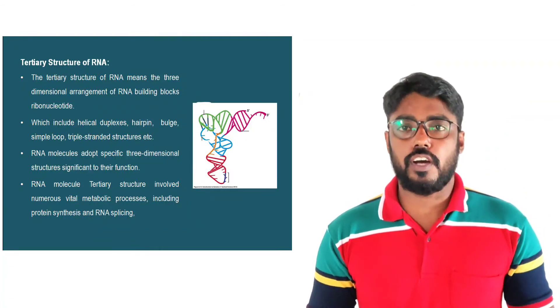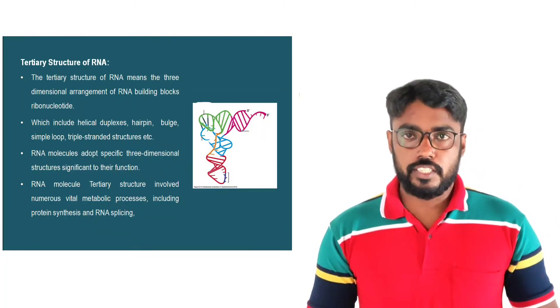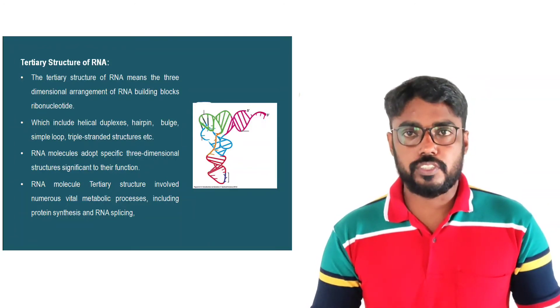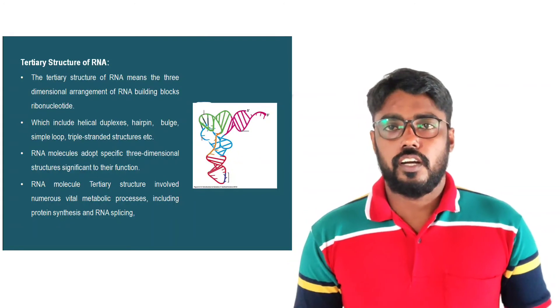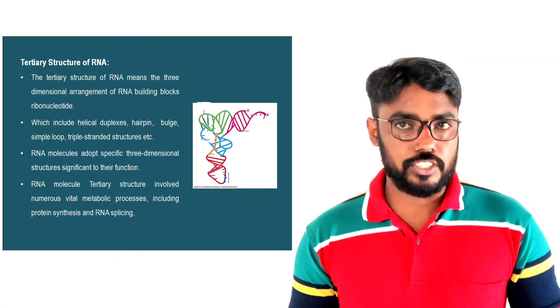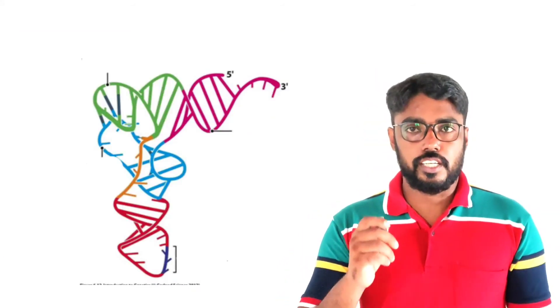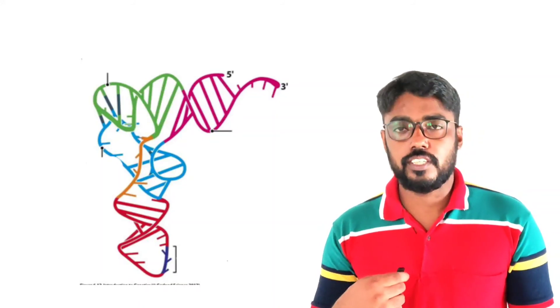In the tertiary structure of RNA, the ribonucleotides are arranged in a three-dimensional form. This includes double helical structures, hairpin loops, stem loops, bulges, and internal loops. It also contains triple-stranded structures. RNA adopts this three-dimensional structure for specific roles in the cell, and RNA molecules with tertiary structure are involved in various cellular processes including protein synthesis and RNA splicing. In this figure, you can see the double helical part, the triple-stranded part, and various loops and bulges present in the tertiary structure of RNA.